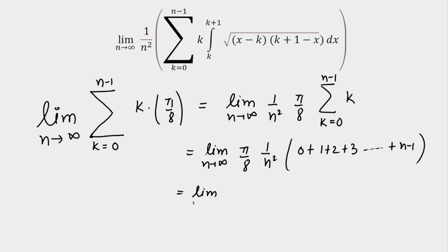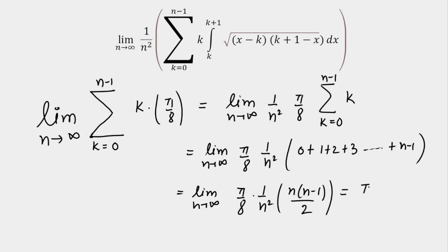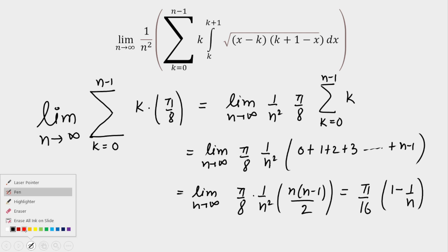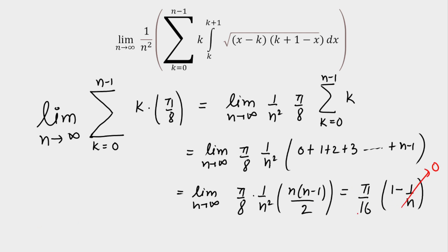The sum 0 + 1 + ... + (n−1) equals n(n−1)/2, using the formula for the sum of the first n natural numbers. So the expression becomes: limit as n→∞ of (π/8)·(1/n²)·n(n−1)/2 = (π/16)·limit as n→∞ of (1 − 1/n). Since 1/n → 0 as n → ∞, the final answer is π/16.